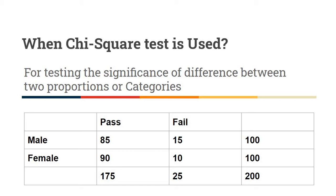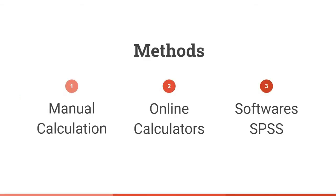In this example, we are looking for association between two variables such as gender and the result outcome. In gender we have two subgroups — male and female — and in results we have two groups: pass and fail. The question is whether the difference in results between male and female is significant or not. To answer this, we are going to apply the chi-square test.